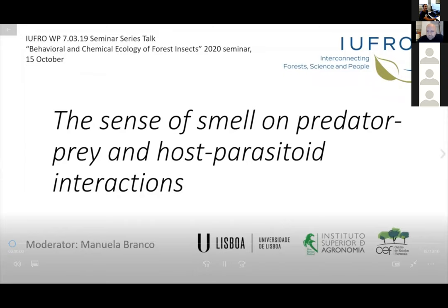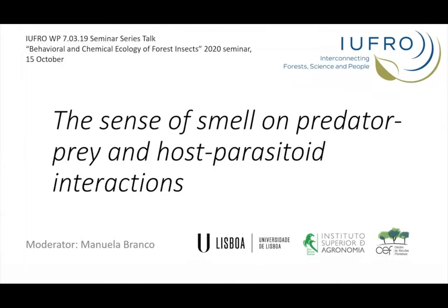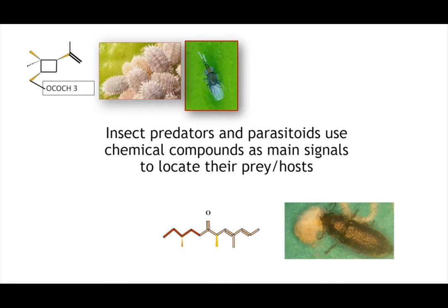Good afternoon. Welcome to this webinar section, where we'll talk about the sense of smell in predator, prey, and parasitoid interactions. I would like to thank Jeremy, Andres, and Sigrid for the invitation to moderate this section, and special thanks to Jean-Claude Grégoire and Sofia Branco for accepting to give their thoughts on this topic. Insect predators and parasitoids mainly use chemical compounds to locate their prey, though they can also use visual cues, thermal vibrations — but chemical cues are probably the most important.